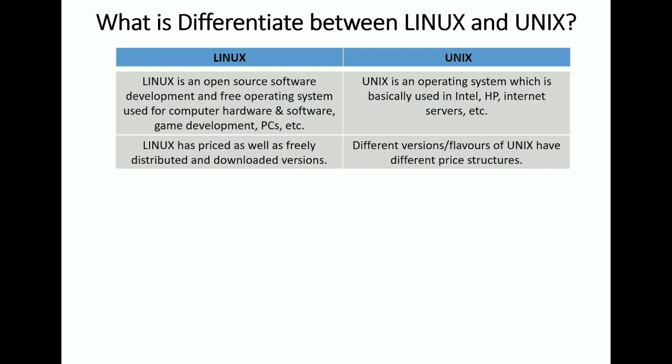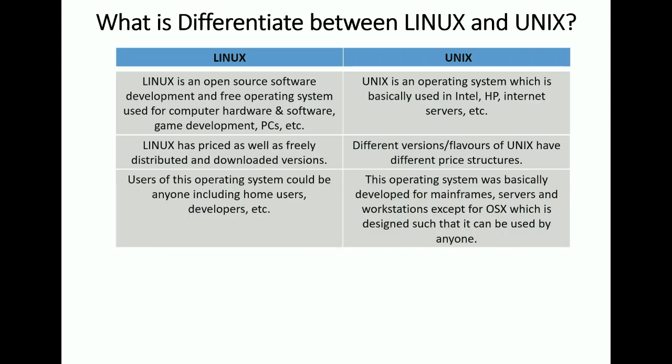Linux has both free distribution versions and priced versions. It is available as open source free OS, but for commercial use, a few versions carry a price, along with paid support. For Unix, there are different flavors and versions available, and each different kind of Unix has its own pricing structure.